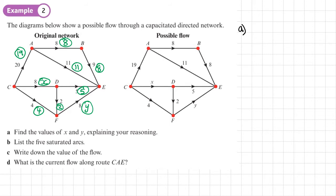Whatever flows into D must equal what flows out of D. The flow in is just X, and that has to equal what flows out of D. The flow out — not the capacity, the flow — is 2 plus 5. So that gives me X equals 7.